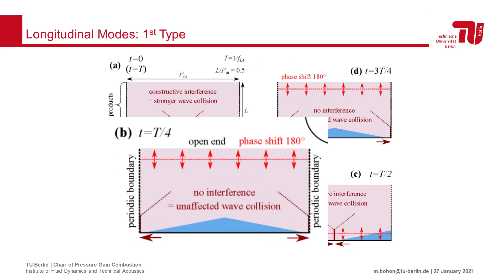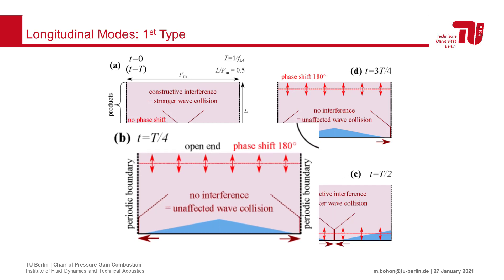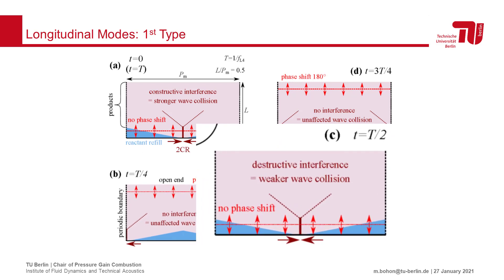At a quarter of the period, the wave reflects from the open end, resulting in a phase shift of 180 degrees and the upstream propagation of a weaker wave. This wave returns to the injector phase at the same time as the rotating components have returned.